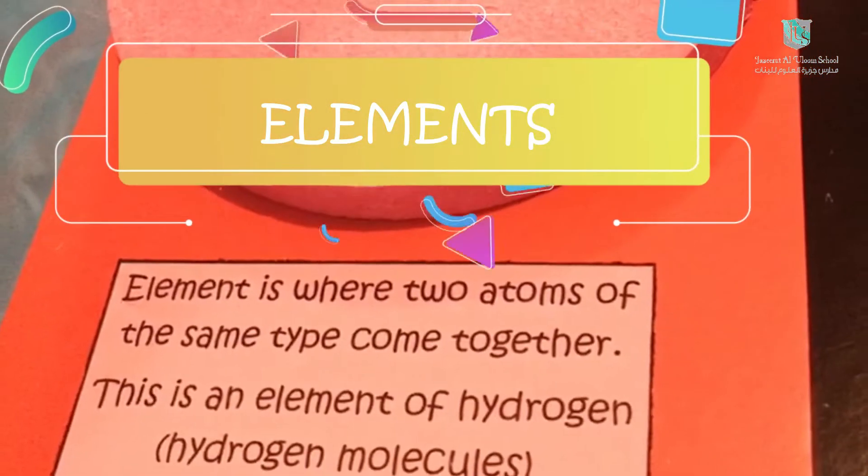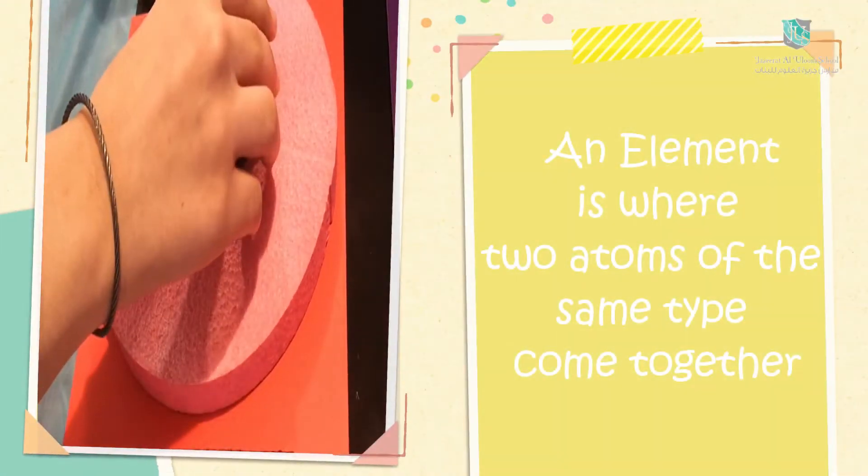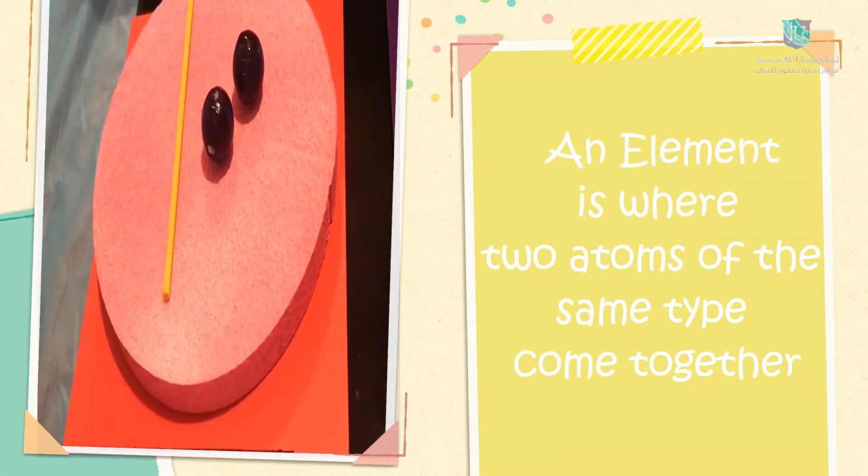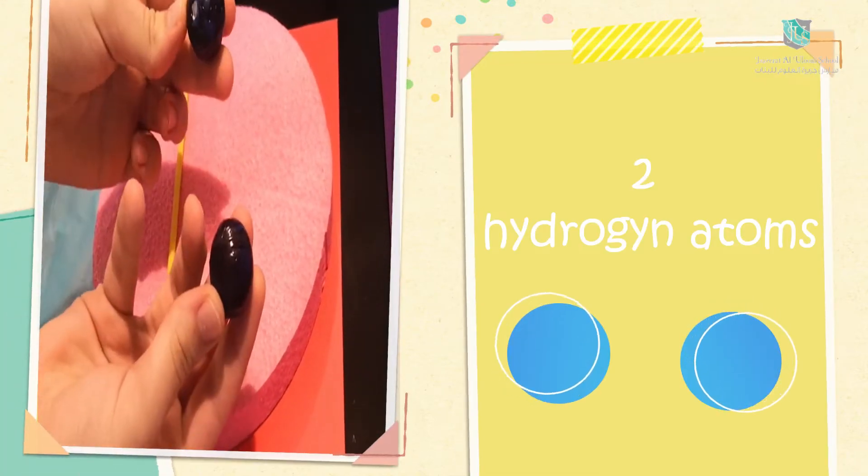First, elements. An element is where two atoms of the same type come together. Here I have two hydrogen atoms. I'll combine them together.